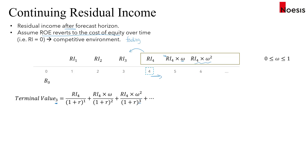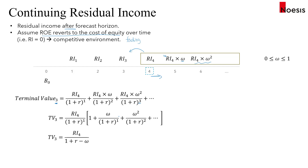Factorizing RI4 over (1 + r) from all terms gives us a geometric progression series, which simplifies so that the terminal value at year three equals the residual income in year four divided by (1 + r − omega), where omega is the persistence factor.